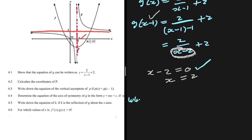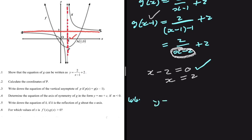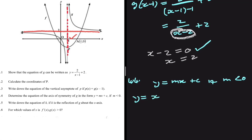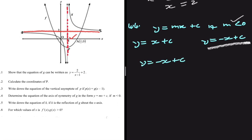Question 4.4: determine the equation of the axis of symmetry of g in the form y equals mx plus c, where m is less than 0. A hyperbola has two axes of symmetry with gradients positive 1 or minus 1. Since m is less than 0, we use y equals minus x plus c. To find c, we substitute the vertical asymptote value for x and the horizontal asymptote value for y: 2 equals minus 1 plus c, giving c equals 3. So the axis of symmetry is y equals minus x plus 3.